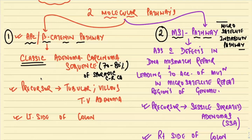The precursors for this APC/beta-catenin pathway are the tubular adenoma, villous adenoma, and tubulo-villous adenoma, as we read in the last class. Usually these adenomas give rise to classic colorectal carcinoma with APC gene mutation, and they usually involve the left side of the colon.